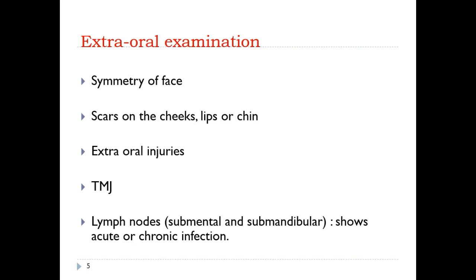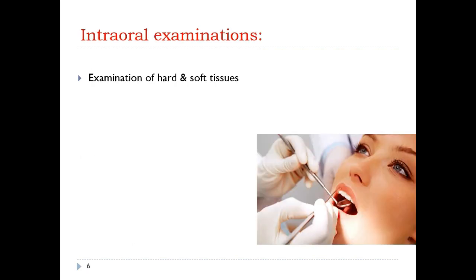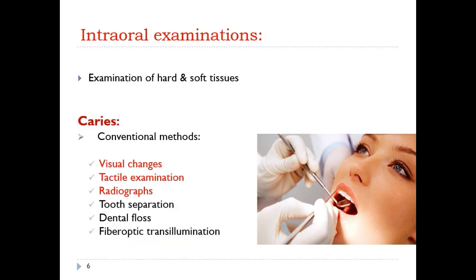In extraoral examination we assess symmetry of the face and any scars on cheeks, lips, or chin. Intraorally, we first examine soft tissues before moving to hard tissues. Conventional methods of caries detection include visual changes — a carious tooth may show a black spot — and tactile examination performed with an explorer.